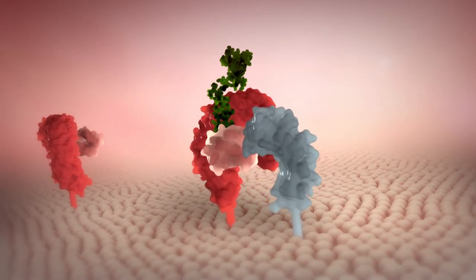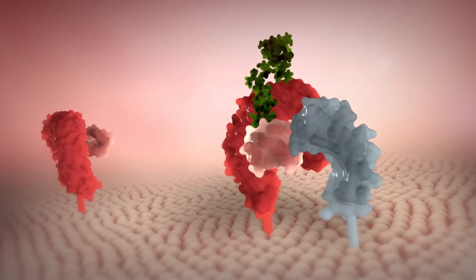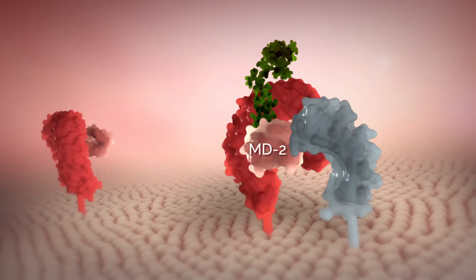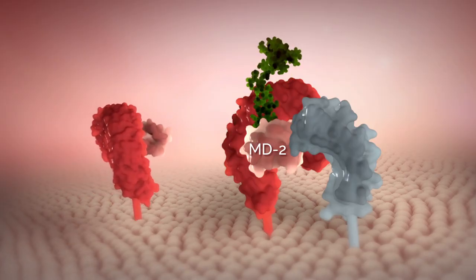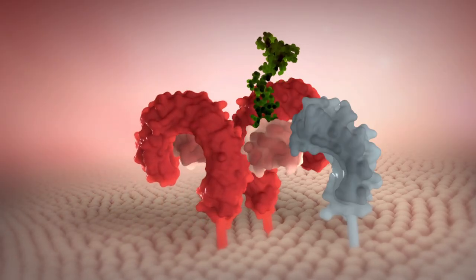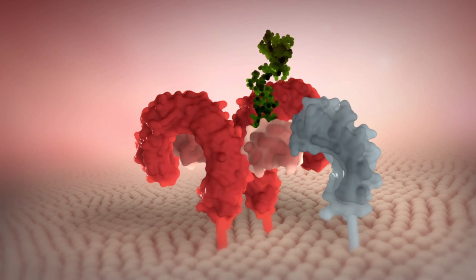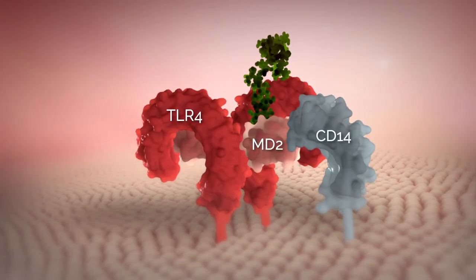TLR4 is able to detect LPS with the help of an accessory protein called MD2. Homodimerization of TLR4 ectodomains are induced when LPS binds to the complex of TLR4, CD14, and MD2.